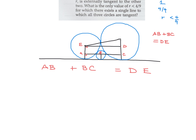To find AB, I'll use the Pythagorean theorem. The hypotenuse is the sum of the two radii, 4 over 9 plus r, and the vertical leg is the difference of the radii, 4 over 9 minus r. So AB equals the square root of (4/9 + r) squared minus (4/9 − r) squared.